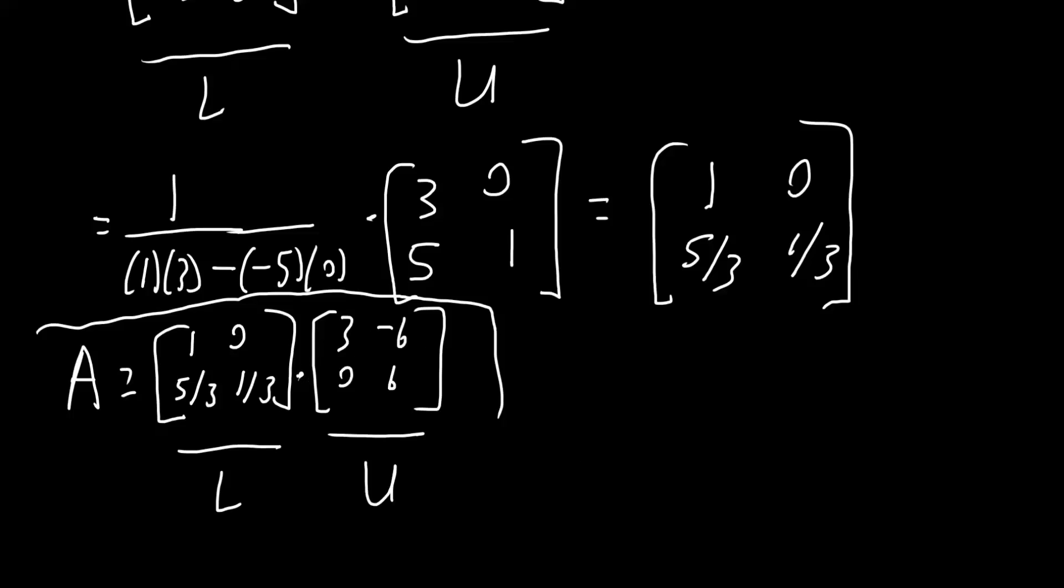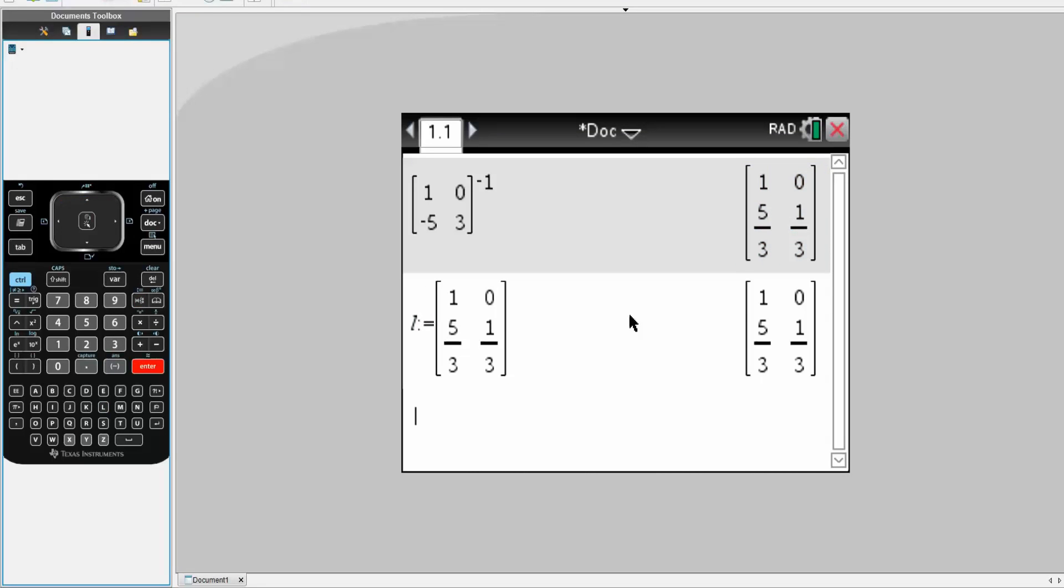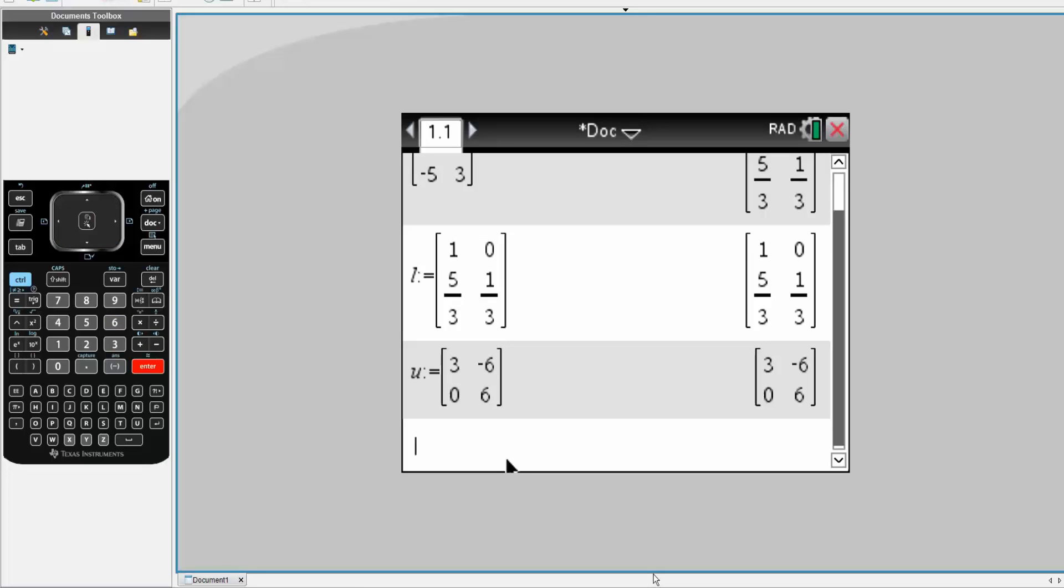And I'll show you why that is. I'm going to use my calculator and write this exact thing: L times U. So, we said that L was equal to this. I can hit control, enter. This is L. And U was equal to control, this icon, matrix. We had 3, -6, 0, and 6 like this. Hit enter. We said that A is equal to L times U. And let me show you why that is. A is equal to L times U. If I hit enter...